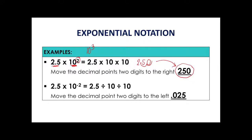If the exponential value is negative, that means we divide the number depending on the value of the exponent. In example number 2, we divide 2.5 by 10 twice. To simplify, we move two decimal places to the left since this is a negative value, giving us 0.025. So for 2.5 × 10⁻², you just move to the left two places, which gives us 0.025.